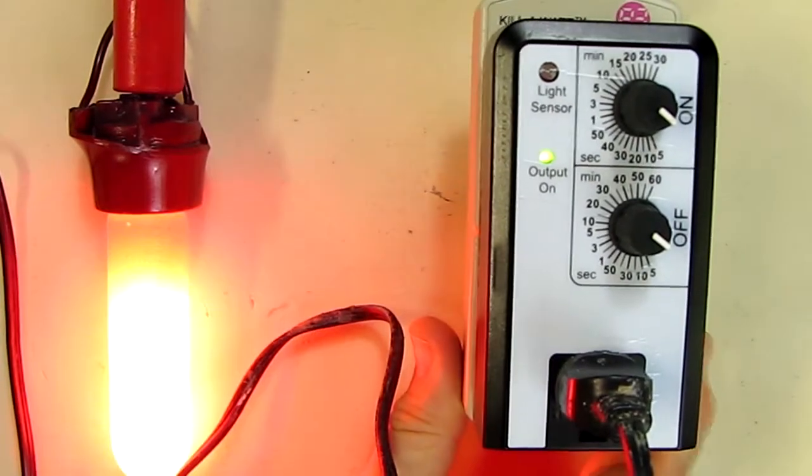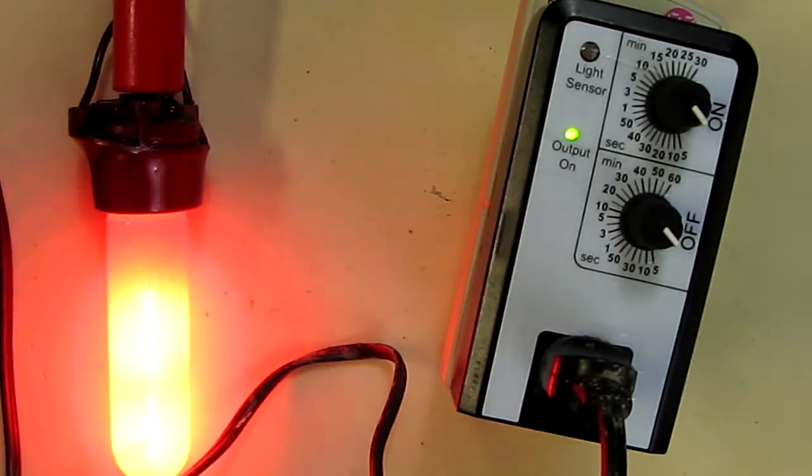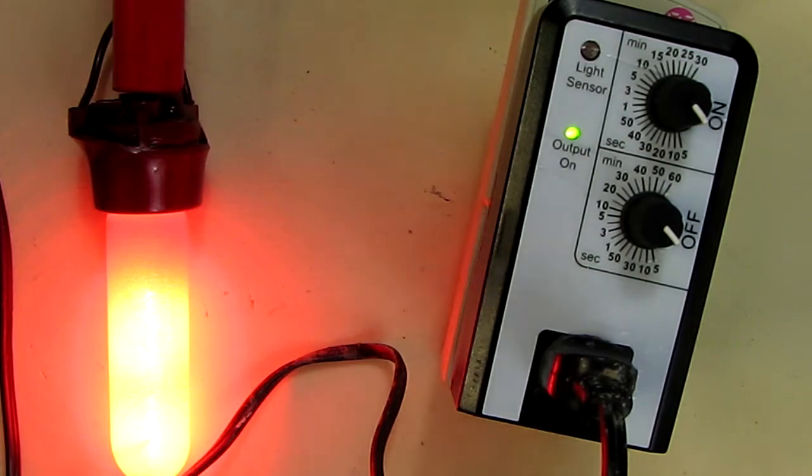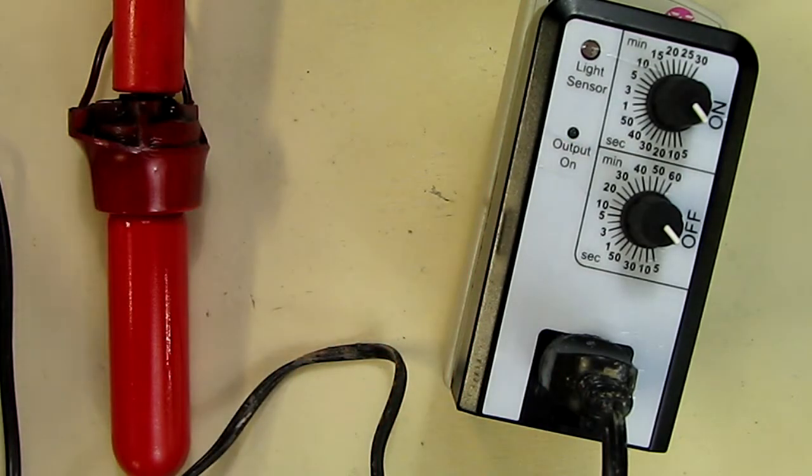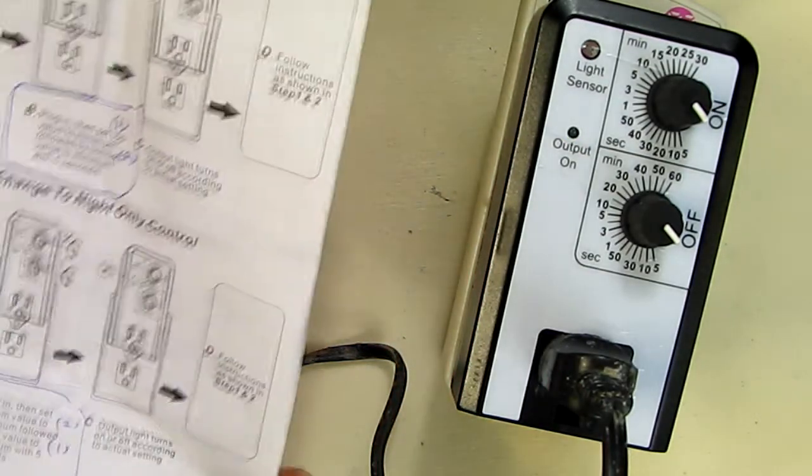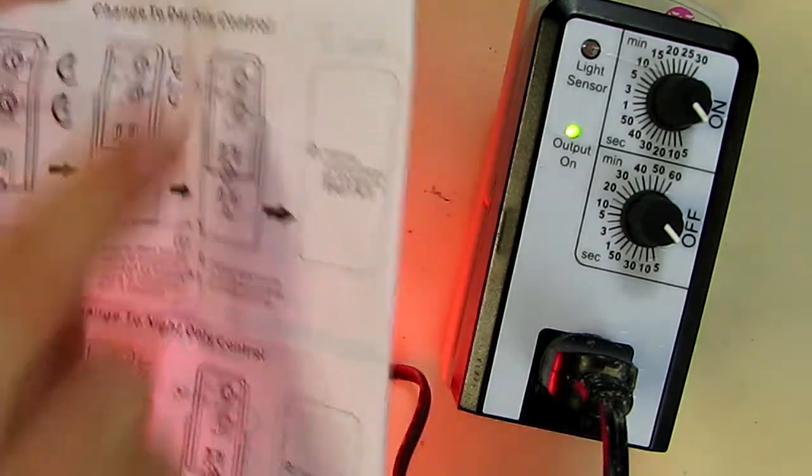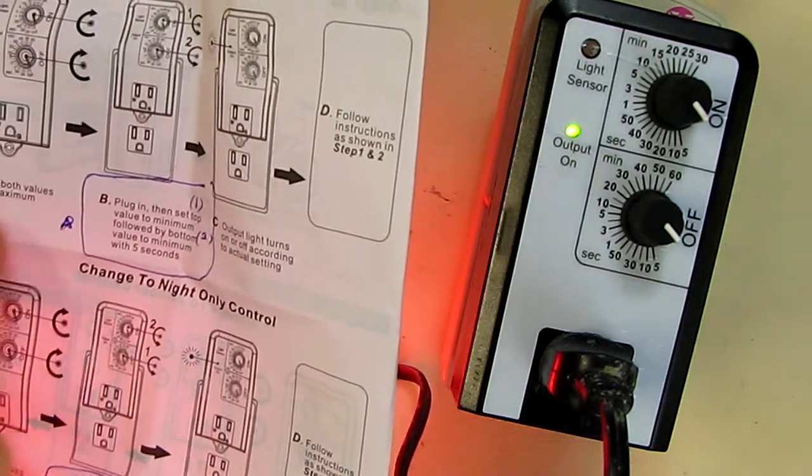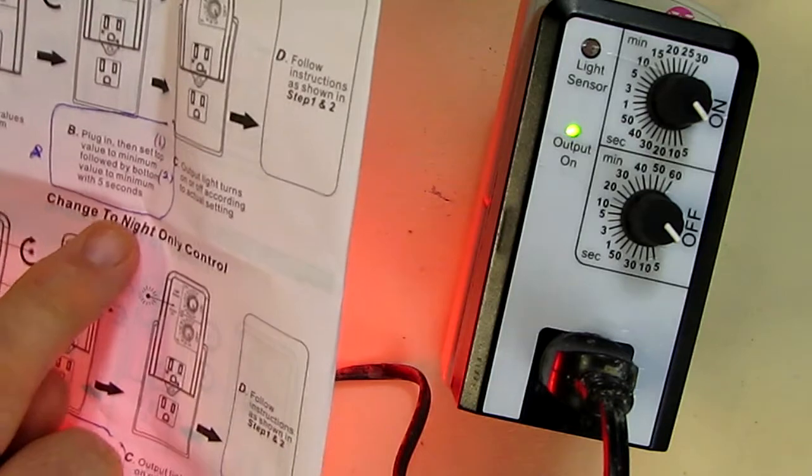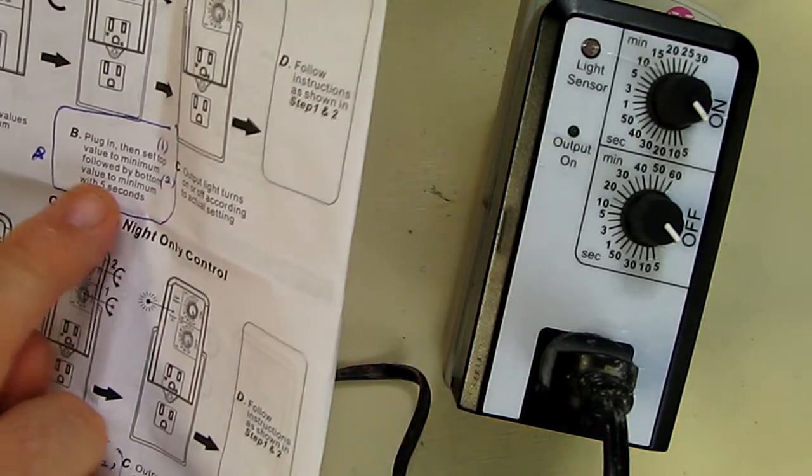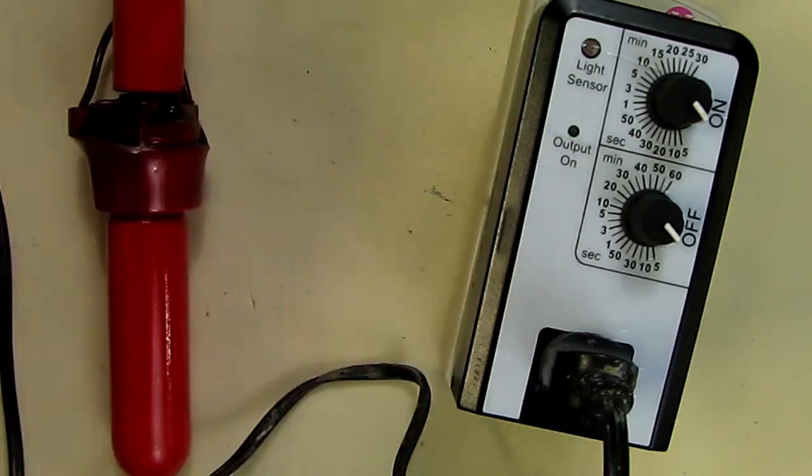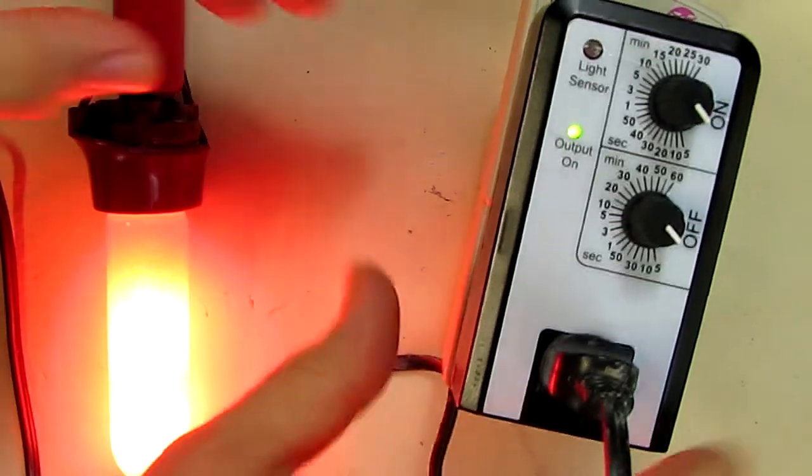Now the next mode we want to try, according to the instruction booklet here, let's see if we can get it to operate just in the day only mode. So here it says set both values to maximum, then after you plug it in, then you turn them to minimum. So let's unplug this.